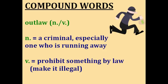Outlaw. The word outlaw actually has two different meanings — it can be a noun or a verb. As a noun, an outlaw is a criminal, usually one who is running away from the police and trying to avoid being captured. As a verb, outlaw means to prohibit something by law. For example, if your country outlaws talking on your cell phone while driving, that action is now illegal and you will be punished.